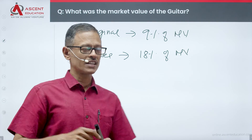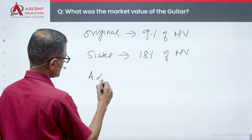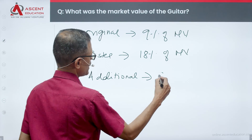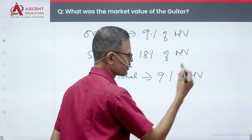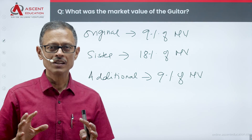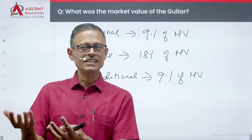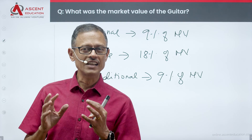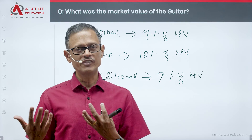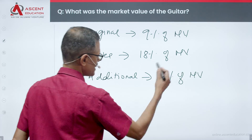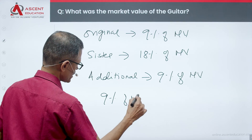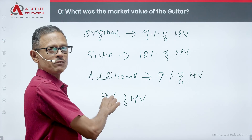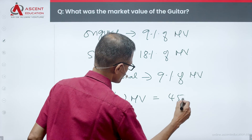If there is an additional discount for the sister, she has been given an additional 9% of the market value as a discount. Because of this additional discount, the profit has come down by 450 rupees. So, the additional 9% of the market value equals that reduction of 450 rupees.